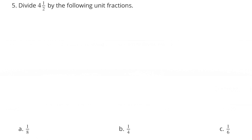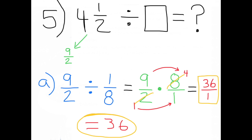Number 5. Divide four and a half by the following unit fractions. A: one-eighth. Four and a half is the same as nine-halves. Nine-halves divided by one-eighth equals thirty-six over one, which is thirty-six. There are thirty-six groups of one-eighth in four and a half.